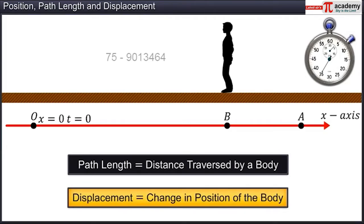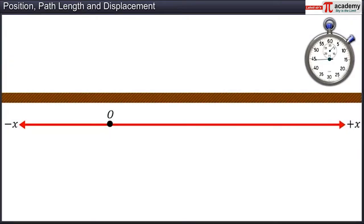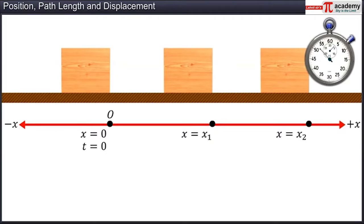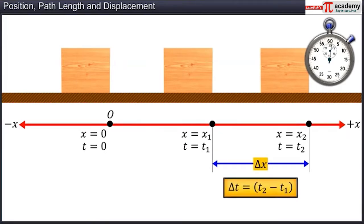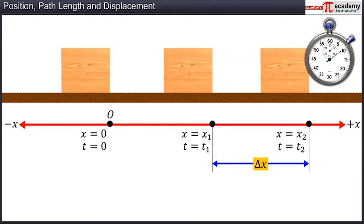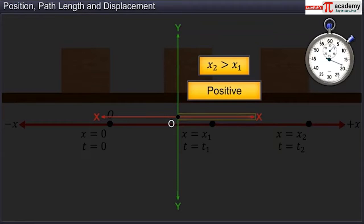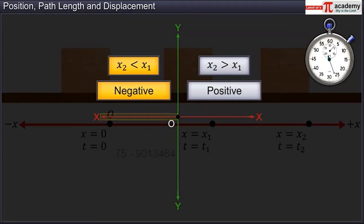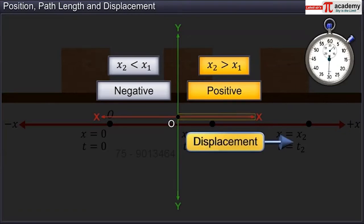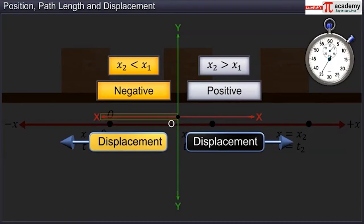Whereas displacement is the change in the position of the body. Let X1 and X2 be the positions of an object at time T1 and T2. Its displacement delta X in time delta T, equal to T2 minus T1, is given by the difference between the final and initial positions: delta X equals X2 minus X1. When X2 is greater than X1, delta X is positive, and when X2 is less than X1, delta X is negative. A positive sign indicates displacement to the right side; a negative sign indicates displacement to the left side.